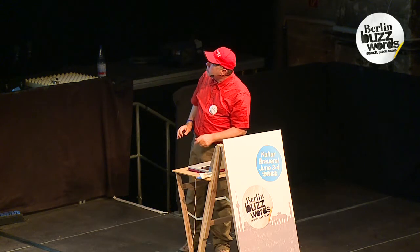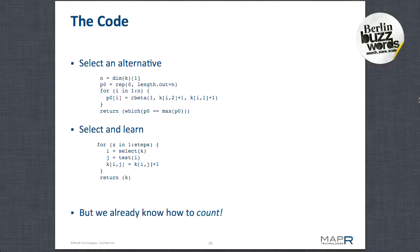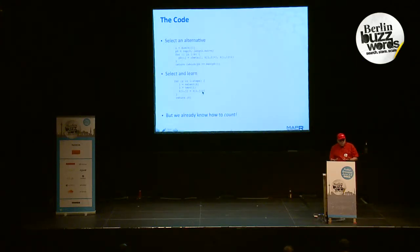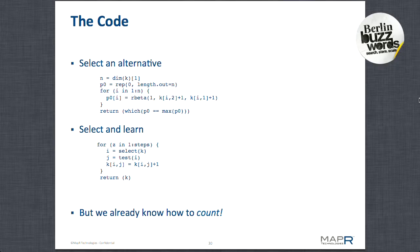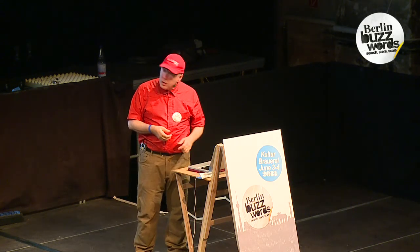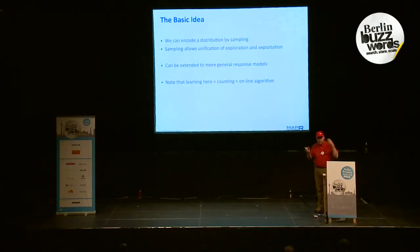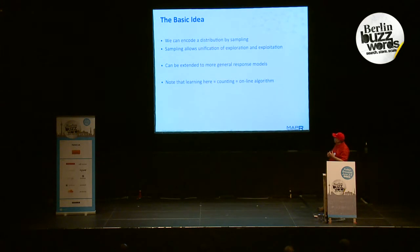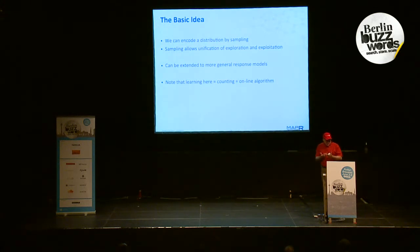Here's the R code that generated those images — this is the part that learned, and right here is the learning. Very nicely, it's addition. And because it's addition, this whole thing is associative and online. So we can do this exact same form of learning in that same form of modified Lambda architecture, which has these wonderful properties of exactitude and perfect transition between real time and long time. The basic idea for this learning algorithm is that you can encode a distribution by sampling, and that can give you key optimality results.